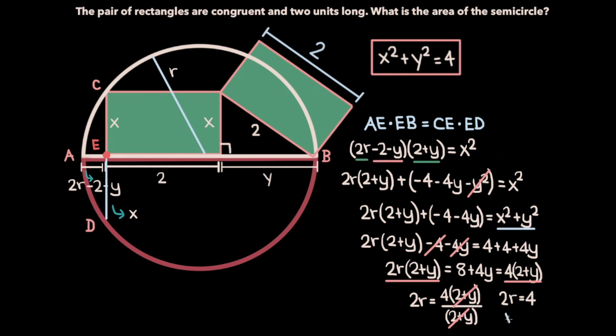So r, the radius of the semicircle, is equal to 2. Recall that we're looking for the area of the semicircle, not the radius. The area of the semicircle is going to be pi r squared over 2. We calculated that r, the radius of the semicircle, was 2, so we have pi times 2 squared, which is 4, divided by 2, so 4pi over 2, which is 2pi. So the area of the semicircle is 2pi, and that's all there is to this problem.